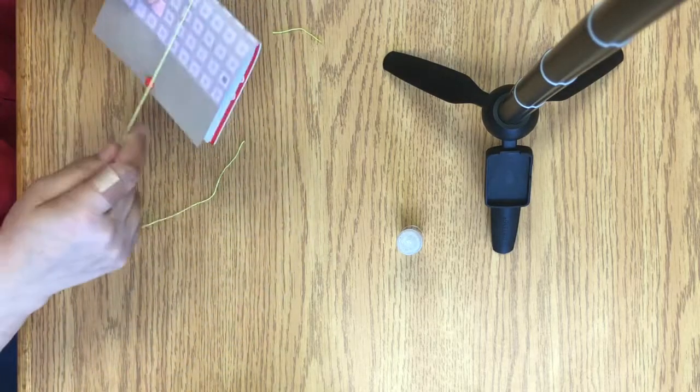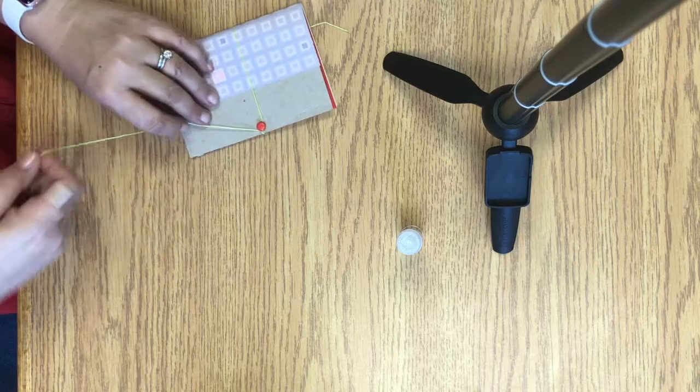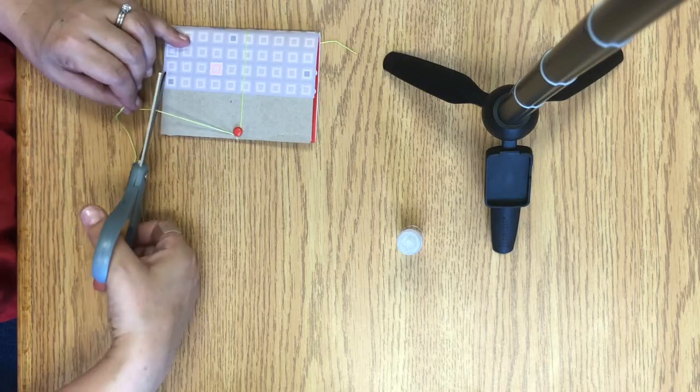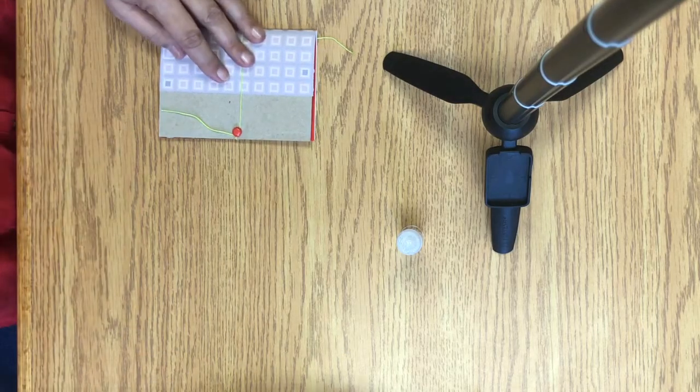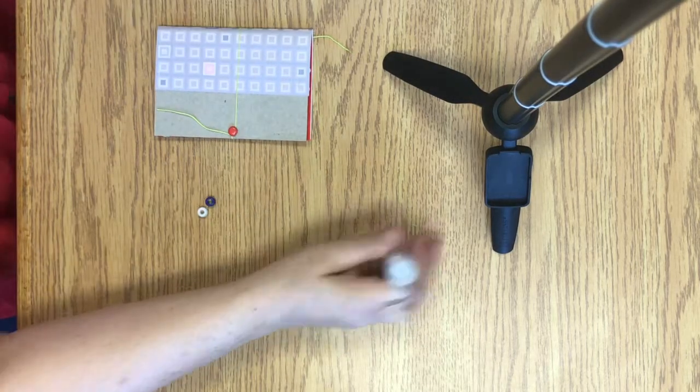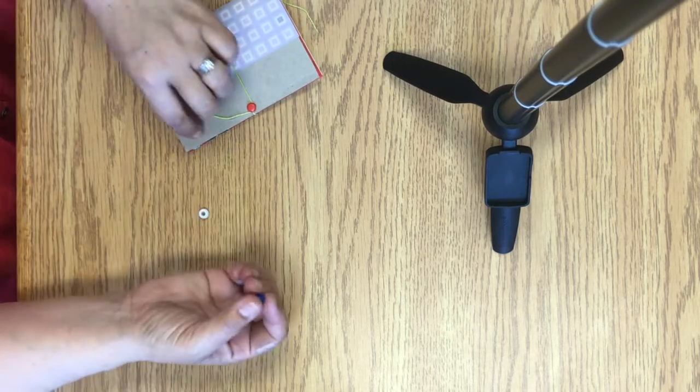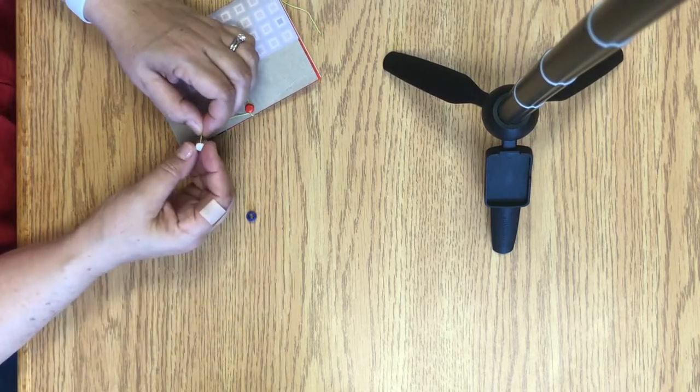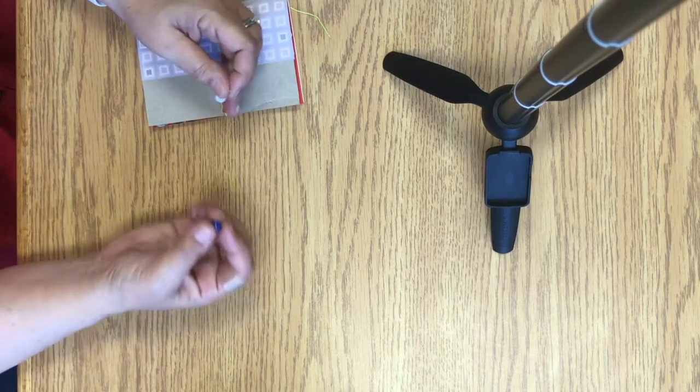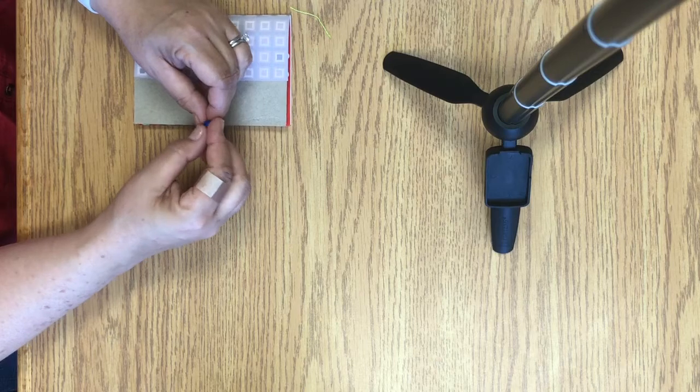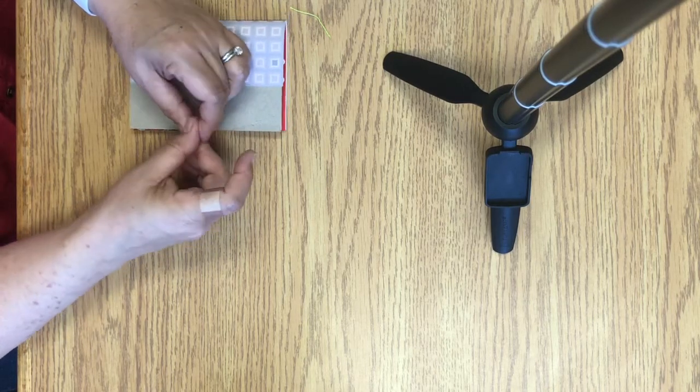And now we can wrap the floss around. I'm just going to cut it so it's not too long. And then the last thing, just for decoration, is to put the beads on the end of the floss. So I put one bead on and then the second bead I actually tie to the end of the floss to keep the beads from coming off.